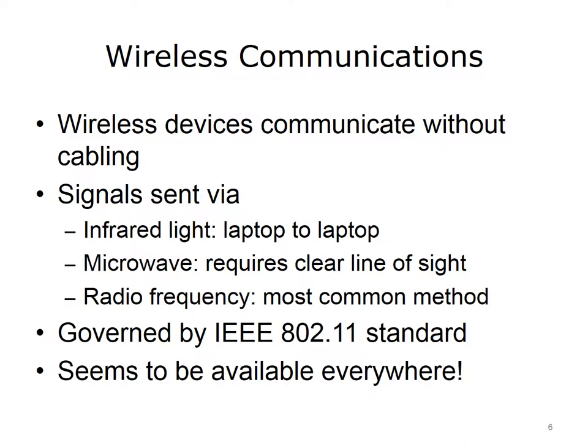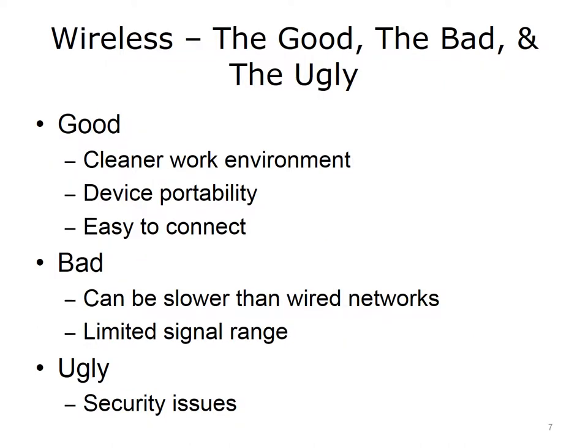Wireless communication is prevalent throughout the world, and its use is only going to continue to grow. As with most technology, there are good, bad, and ugly aspects of wireless communication. Wireless communication usage is ever-increasing because cables are not needed to connect devices to a network. The benefits of not using cables include a cleaner physical work environment, portability — for example, anyone can carry a laptop around campus and connect to the Internet everywhere — and it is easier for users to connect to the network if the network provides open connectivity. The bad part about wireless is that signal interference and other factors can cause slower connection speeds than wired networks.